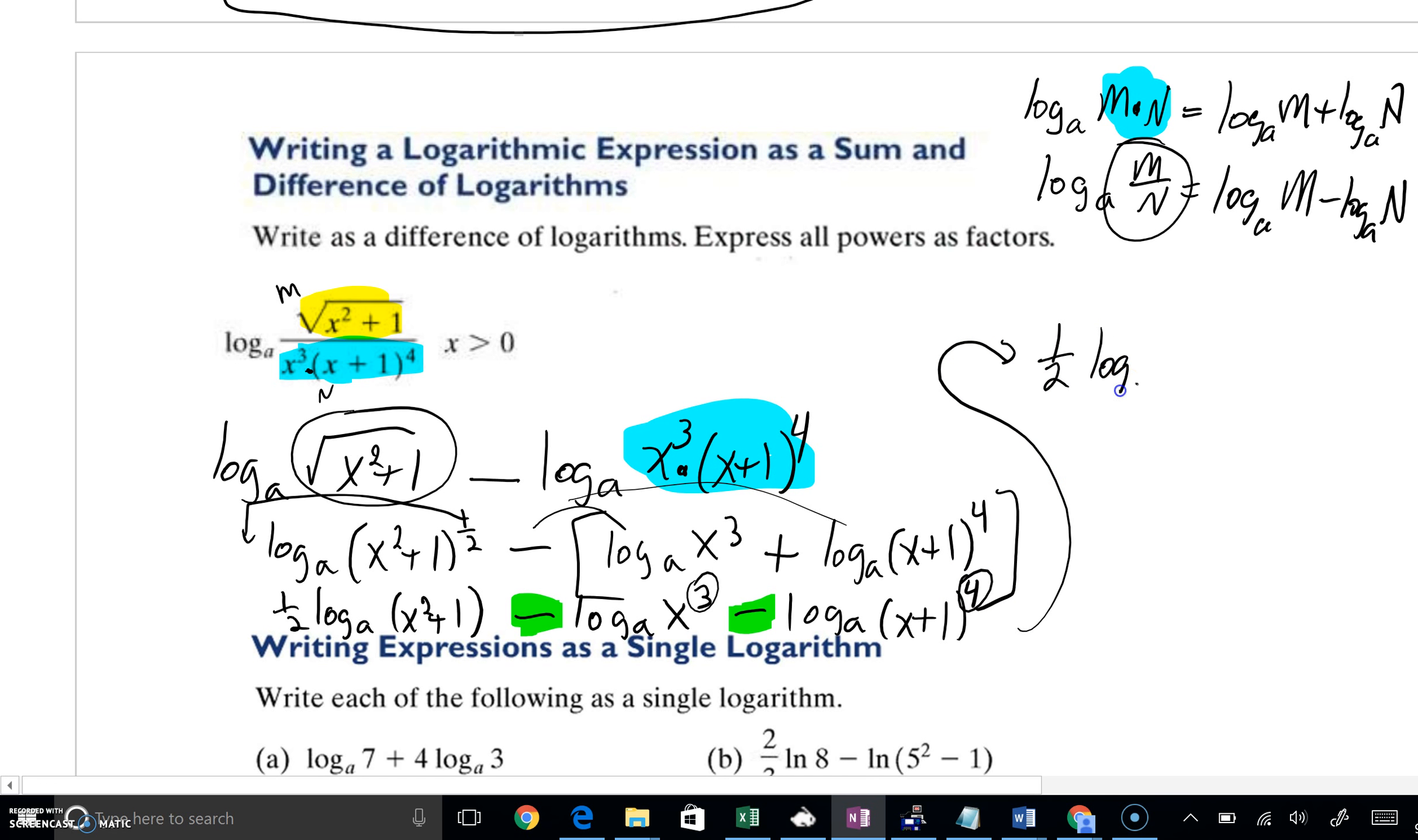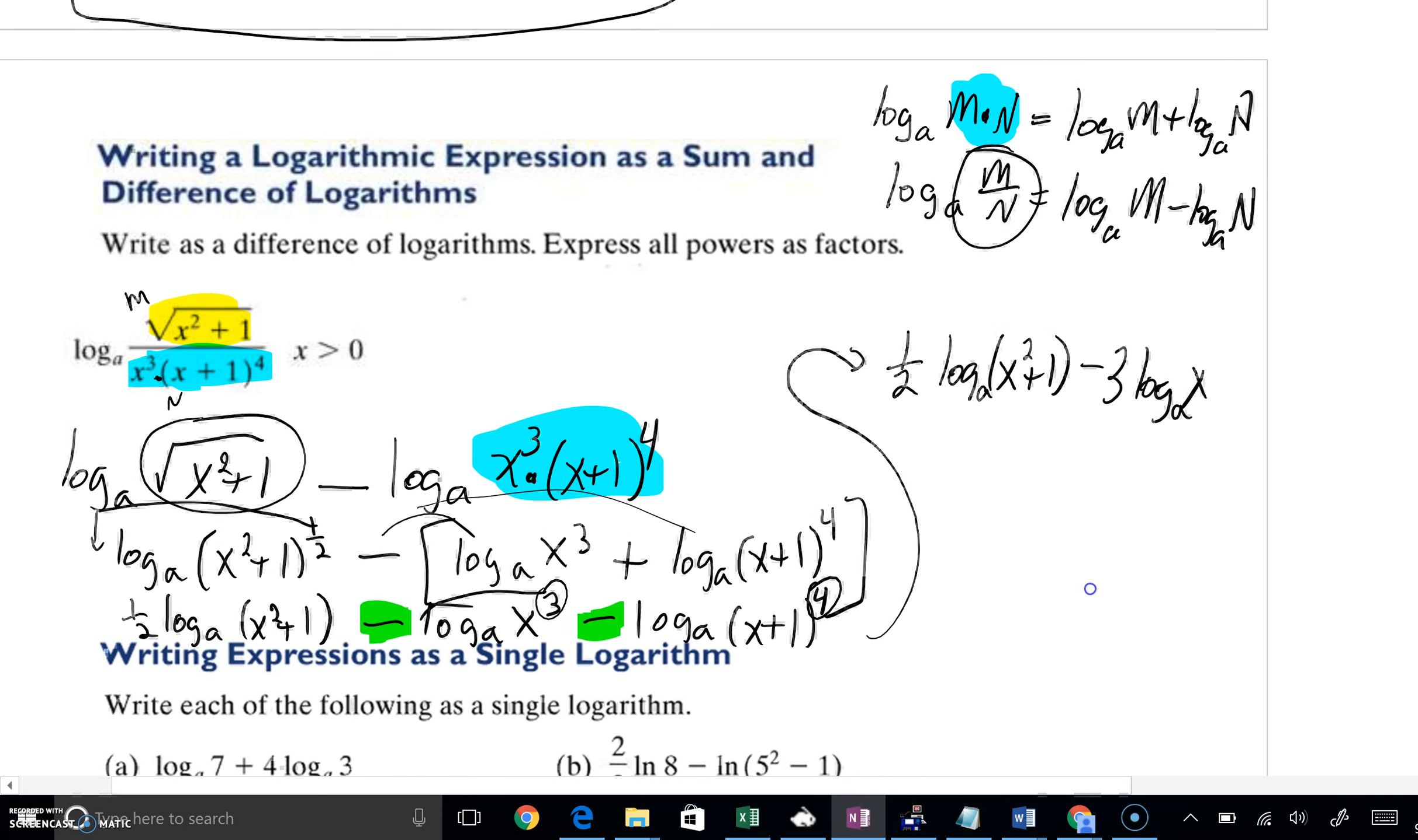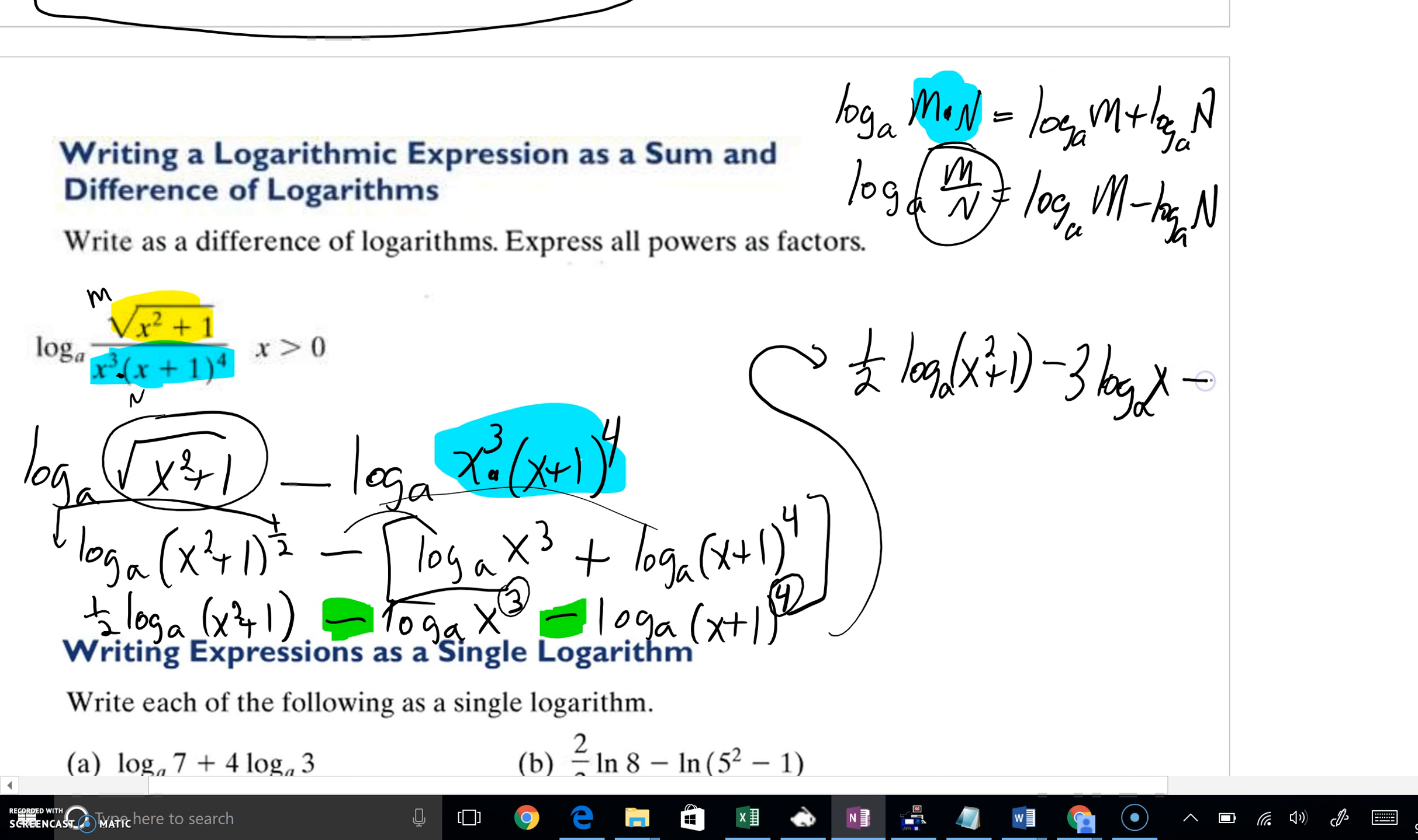Now, don't forget we've got our power. So I'm going to write a final answer here. We've got one-half log base A of X squared plus 1. But now I'm going to bring down that 3. We're going to say minus 3 log base A of X. Then we're going to say minus, then we're going to bring down that 4. We'll say 4 log base A of X plus 1. This is going to be your final answer. And then you are good to go.